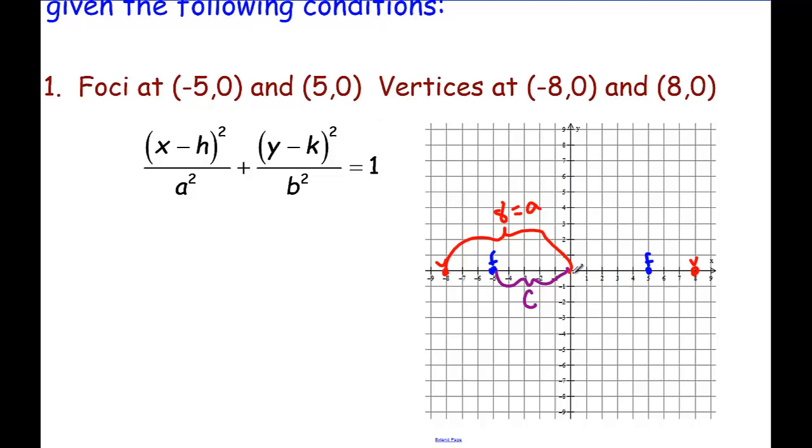We've got our center here at the origin, of course, because the center is always halfway between the foci or the midpoint of the vertices, and you can easily count boxes to find that in this situation. So we know our h and k. Our h and k is just zero comma zero.